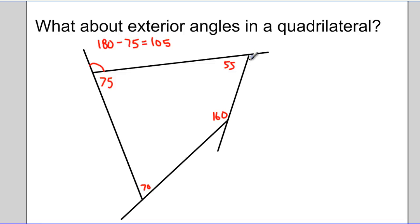Likewise, going around the quadrilateral, 180 take away 55 would be 125. 180 take away 160 would be 20 degrees. And lastly, 180 take away 70 would be 110 degrees.